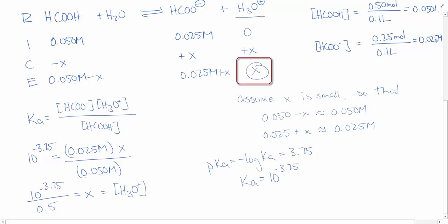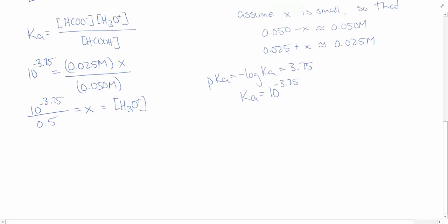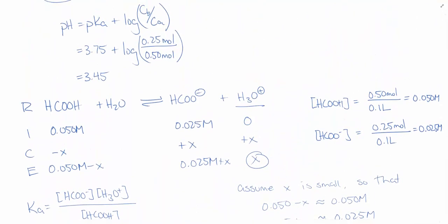Now the question asked us for the pH, so we need to take the negative log of this. So our pH is equal to the negative log of the concentration of H3O+, which is equal to the negative log of 10 to the negative 3.75 over 0.5. If we plug that into our calculator, we will find that the pH is 3.45. This is exactly as we calculated above using the Henderson-Hasselbalch equation.